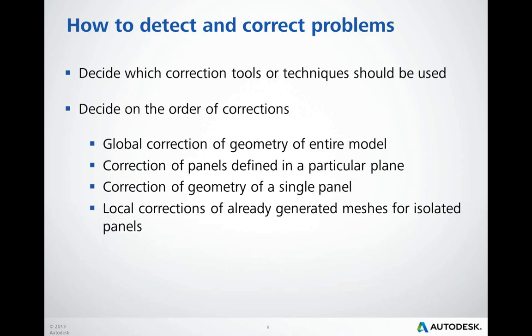After detecting and checking the range of meshing issues in your model, you need to decide what correction options are best for a particular situation. For models with a large number of meshing issues caused by lack of precision detected in many locations, I would suggest starting with general correction tools first, intended to solve most of them at the same time. Then, for remaining issues, you can gradually limit the range of modifications to selective planes, panels, or just a few nodes only.